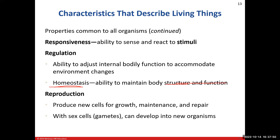Next is reproduction — the organism's ability to produce new cells for growth, or new cells to maintain certain structures as they age out, or to repair them if they're damaged. With our sex cells, known as our gametes, when we're dealing with reproduction that is the creation or development of new organisms. But reproduction isn't just about creating new organisms — when it pertains to cells, it could be for normal growth during childhood, or just maintenance — normal wear and tear — or repair when we damage something, like getting a scrape on the knee.